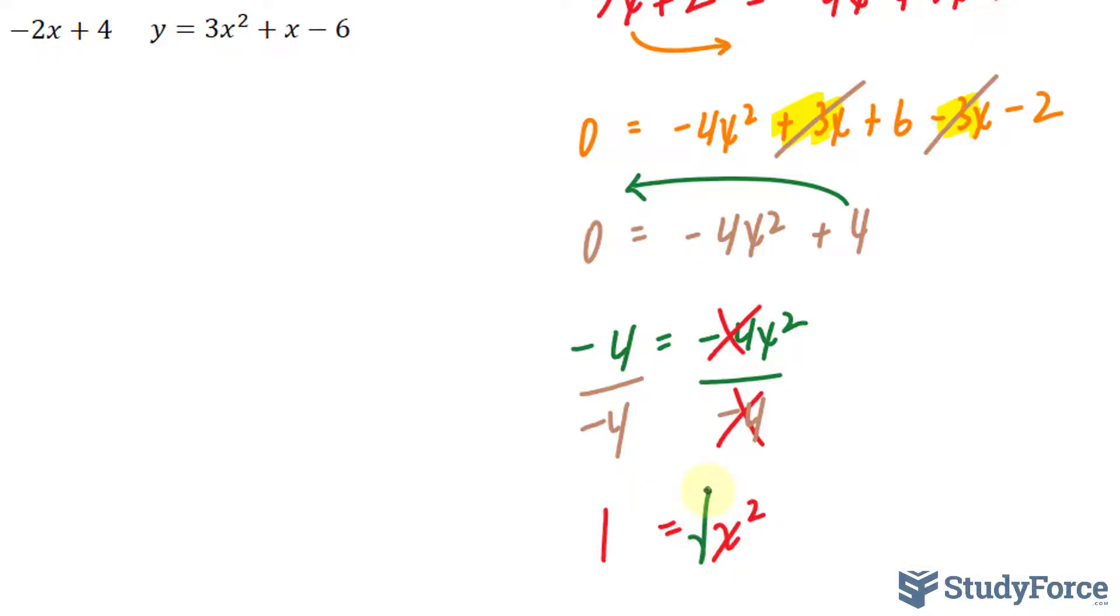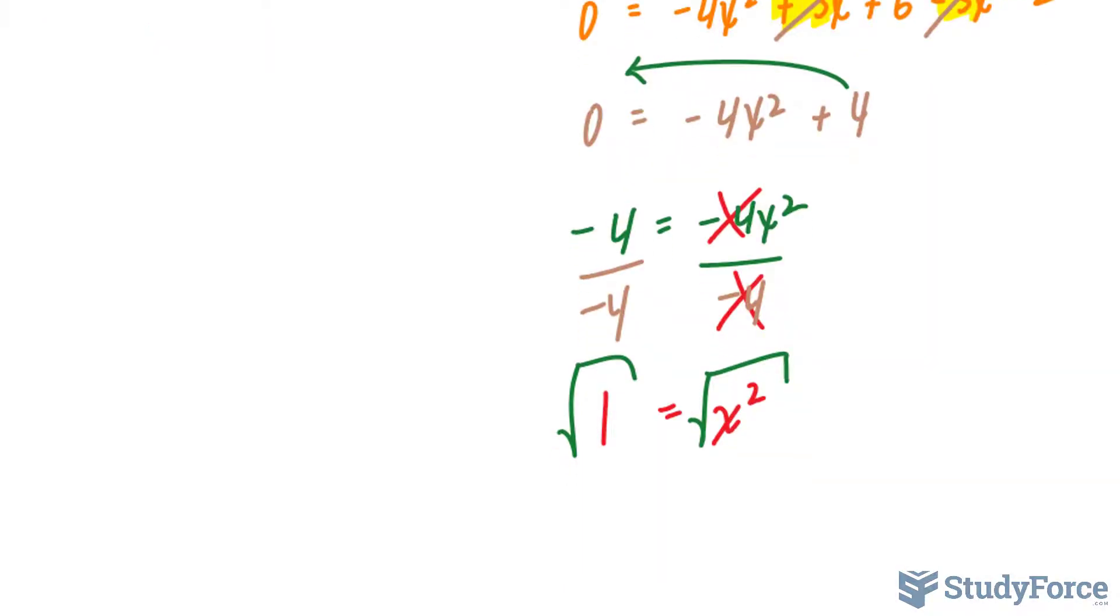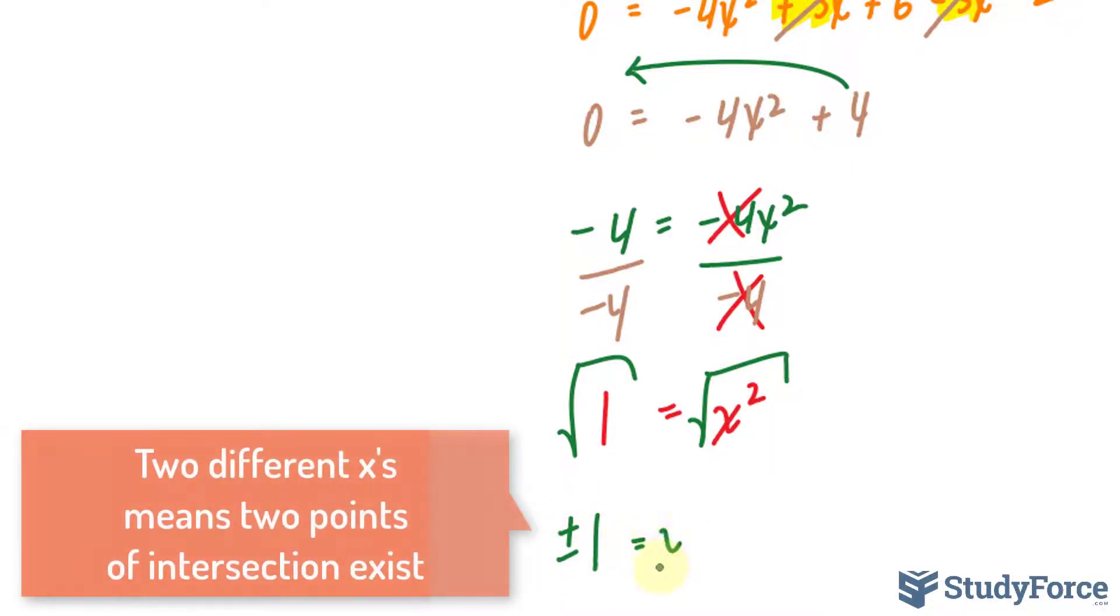Square rooting both sides, this will eliminate this exponent of 2, and the square root of 1 makes plus or minus 1. This means that we'll have two points of intersection.